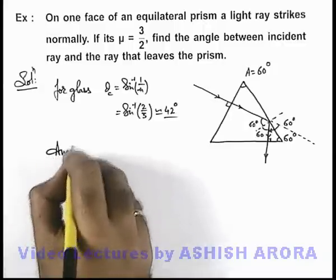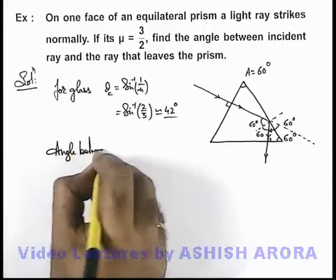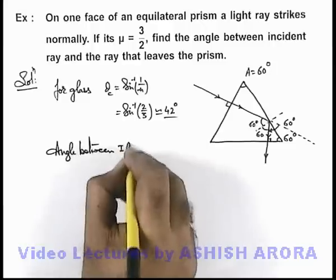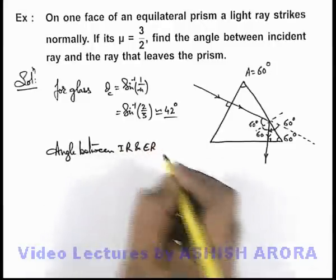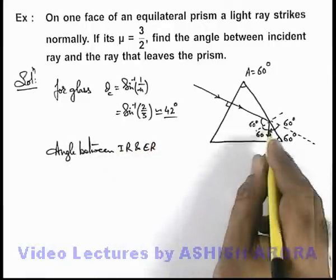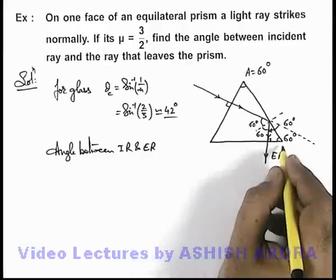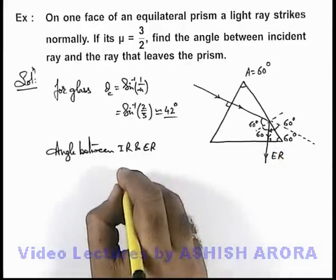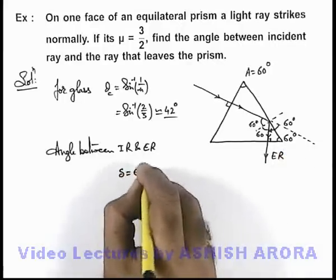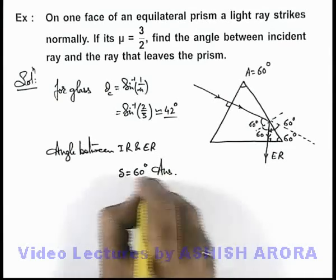We can write down the angle between incident ray and emergent ray. It is the emergent ray which is emerging out from the prism from the base of it. This angle delta can directly be given as 60 degrees, which will be the answer to this problem.